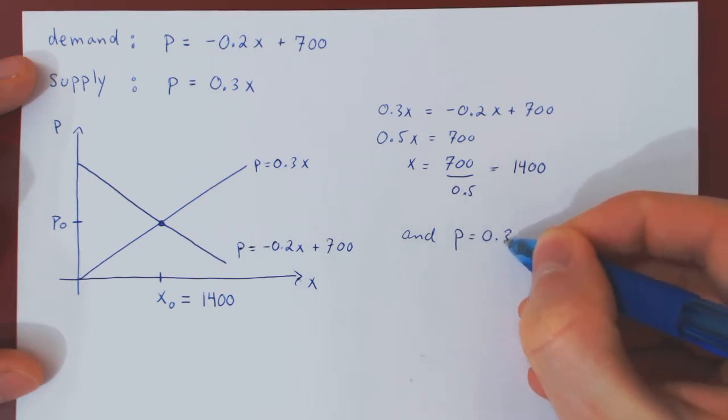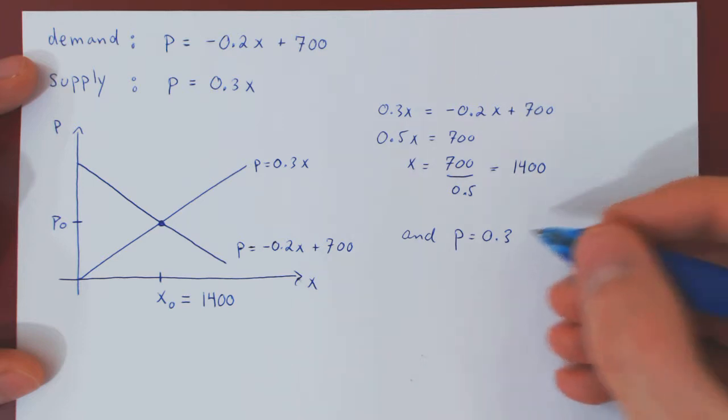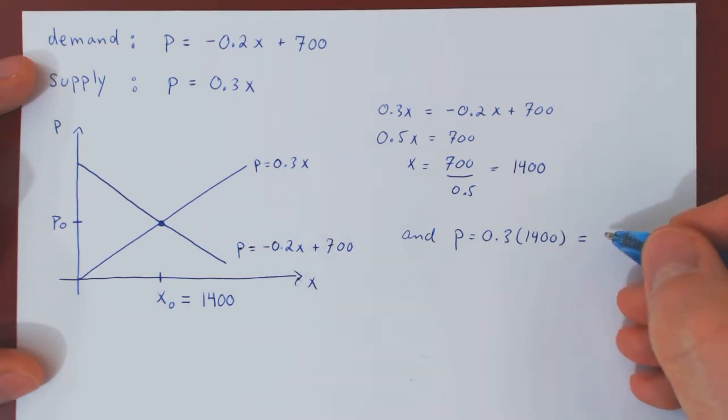So 0.3 times 1400. And this will give you a unit price of $420.